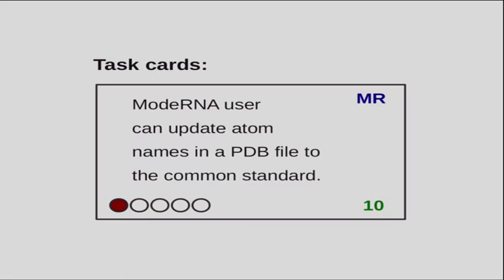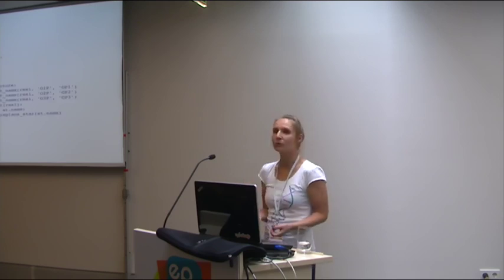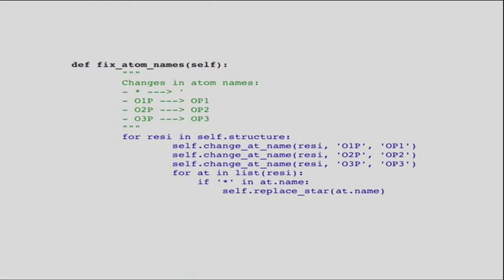For example, here we wanted to change names in a PDB file — some atoms had wrong names and we wanted to correct them. Defining such a clear task helped us to write clear code, because answering the question 'I want to change atom names' is much easier than answering 'I want to model RNA.' This small question is much more concrete and the answer can be found more easily. As a result, we were able to write one function that does exactly one thing: the name of the function is self-explanatory, the documentation states clearly what the code does, and the code has just seven lines.